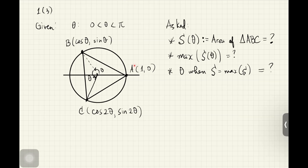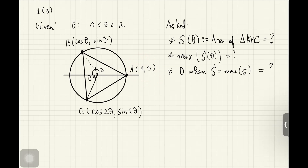We are told that we have points A, B, and C. A is at (1, 0), so it's on the x-axis. The point B is on the unit circle — a circle with radius 1 — which passes through point A. B is determined such that if you draw the radius from the center to B, that central angle is some angle theta.